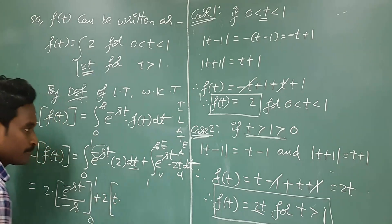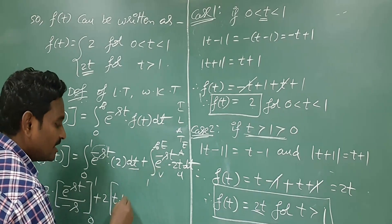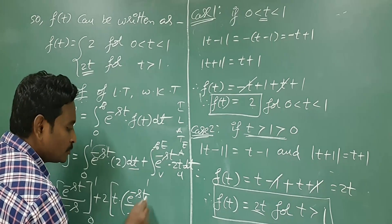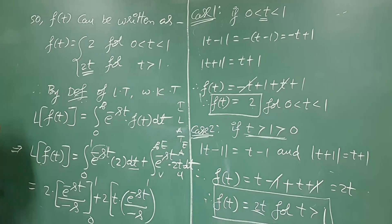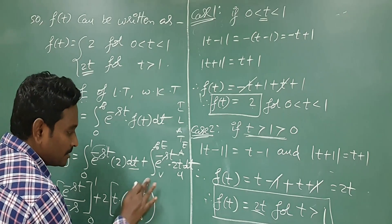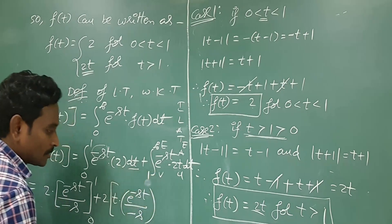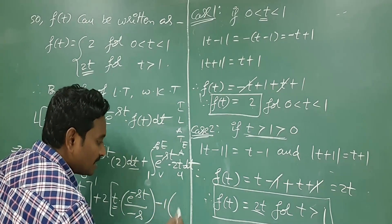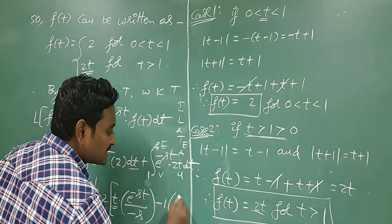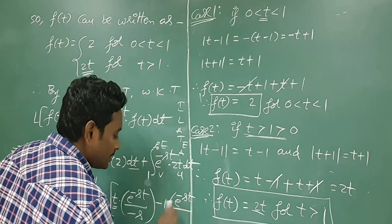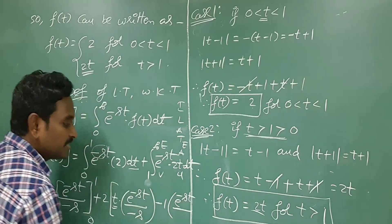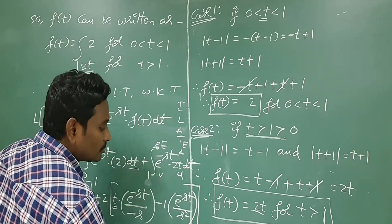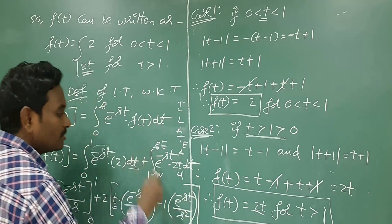Applying the integration by parts formula: t times e to the power minus st over minus s, minus the derivative of t, which is 1, times the integration of e to the power minus st which is e to the power minus st over minus s — giving e to the power minus st over s squared. This is evaluated within limits 1 to infinity.